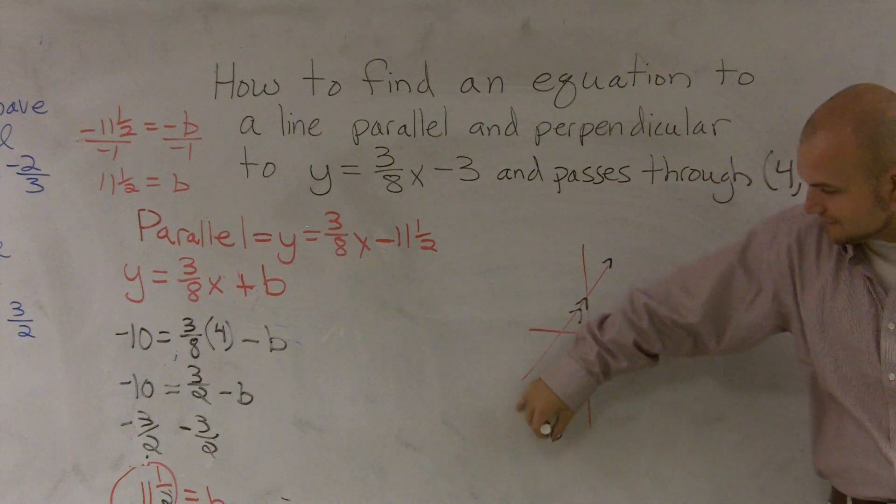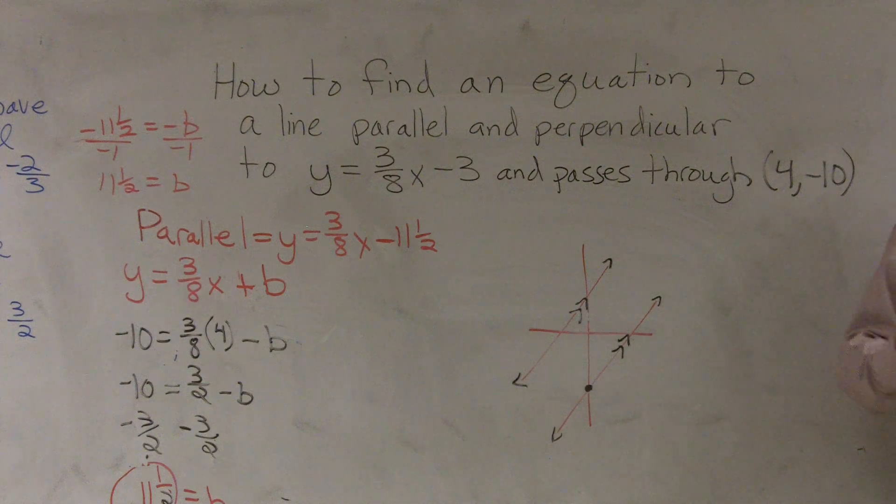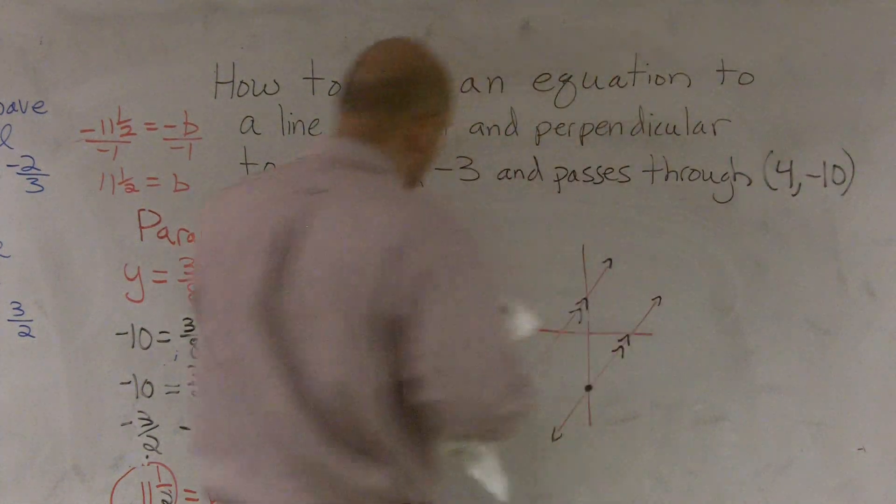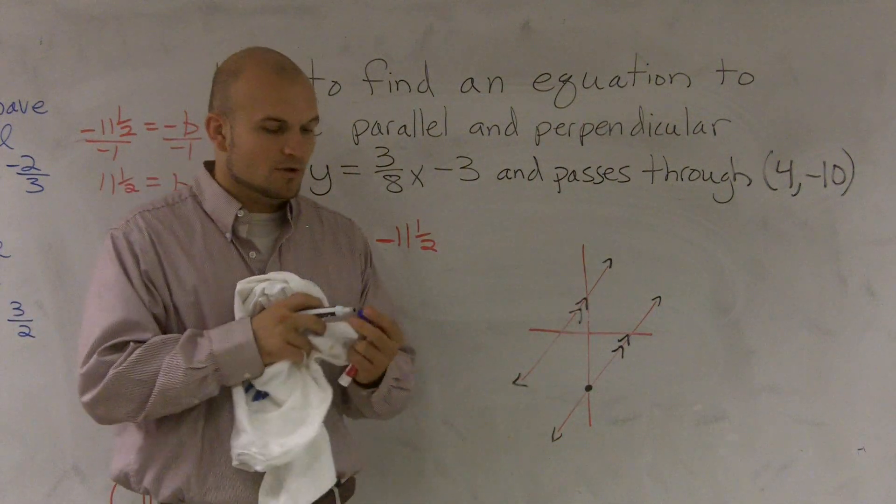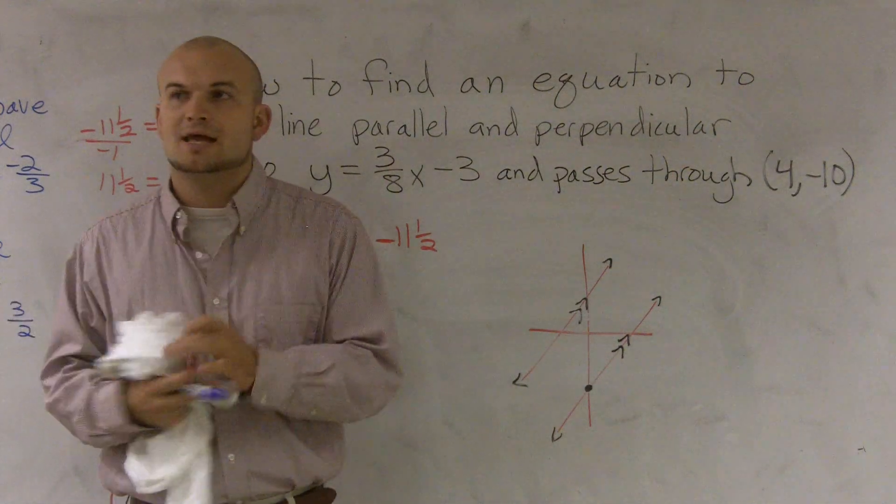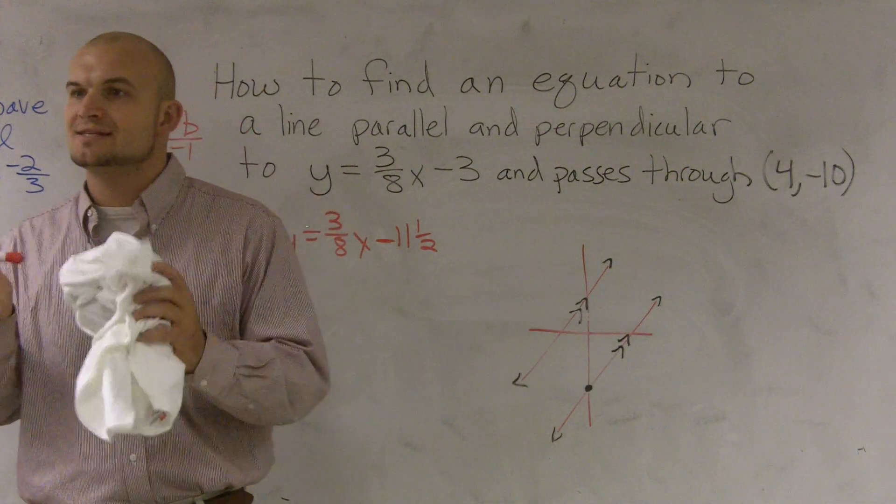So what I need to do is I need to find out what is the new y-intercept of my line that's parallel to it. So I need to figure out how am I going to determine a line that's parallel to it and what has a different y-intercept. Well, the one property we know about parallel lines is parallel lines have exactly the same slope.